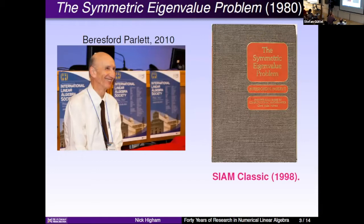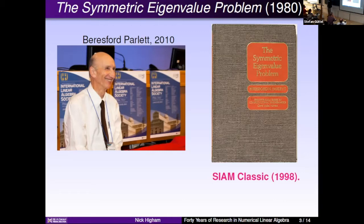Between my undergraduate degree and my MSc, Ian Gladwell lent me Parlett's book, The Symmetric Eigenvalue Problem, to read over the summer — a really superb book. At the time it was a very modern treatment of the topic with lots of new material. Parlett is a great writer; he had clever choices of notation — for example, he would only use symmetric letters for symmetric matrices, so 'A' could be symmetric but 'B' could not. It's now been reprinted in the SIAM Classics series. It includes very good discussion of rounding error analysis and still hasn't dated today.